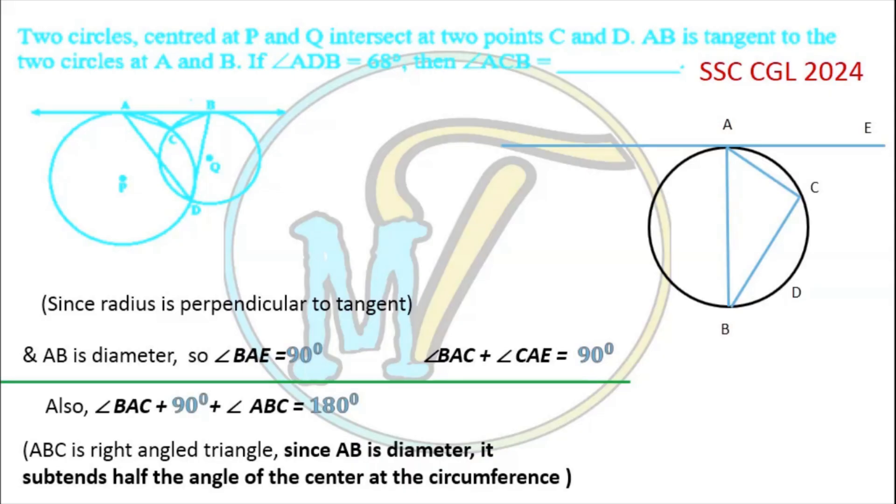Now from angle sum property of a triangle, we can write it as follows. So here we concluded that angle BAC plus angle ABC equals 90 degrees.